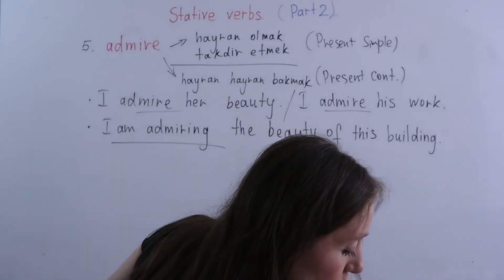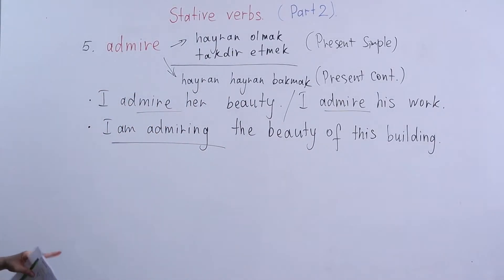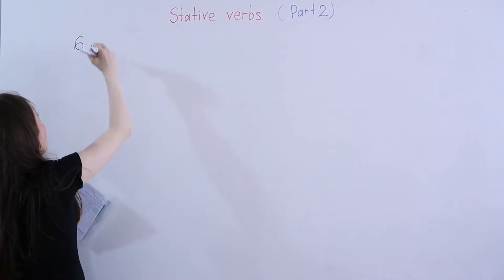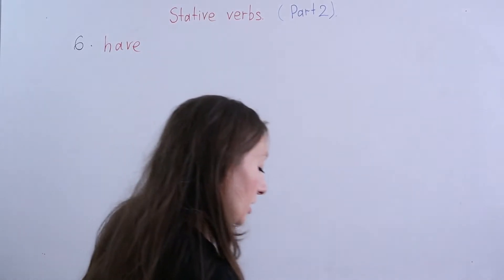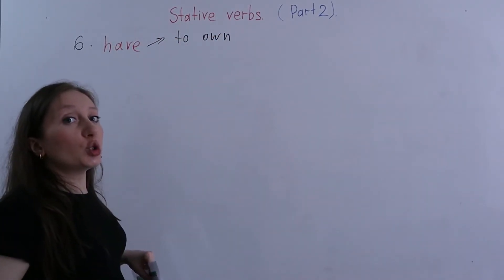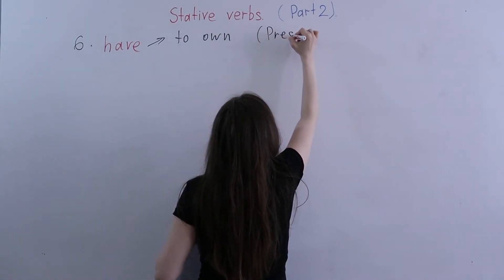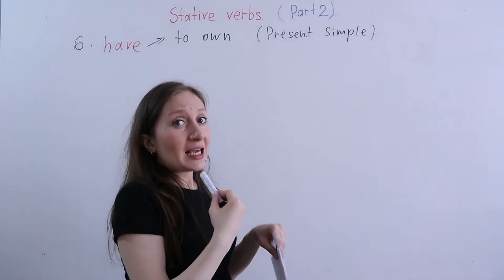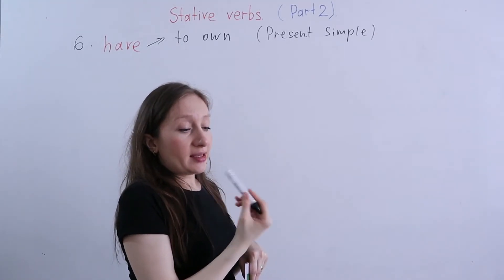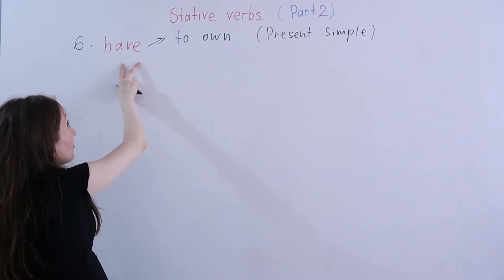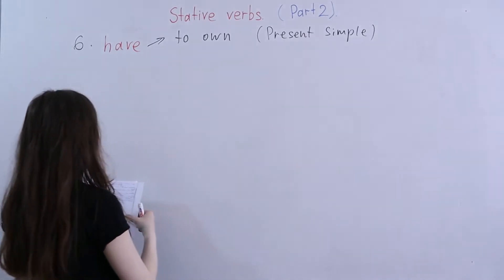And the last verb is 'have.' If the meaning is 'to own' something, we use present simple. For example: 'I have a marker' — I own it, it's mine. Or: 'She has a car' — she owns a car, the car belongs to her. In the meaning of 'own,' we use present simple.